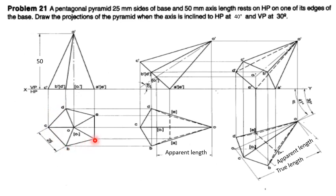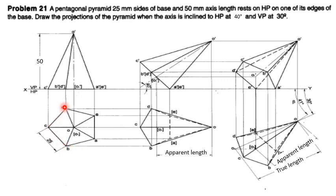All sides are equal, so each side equals 25 mm, and the axis length is 50 mm. The pyramid rests on HP on one of its edges of the base — that is the resting edge AE. Initially, draw AE perpendicular to the XY line, then take the included angle of 108 degrees and draw 25 mm sides. All angles are equal at 108 degrees and all sides are equal.